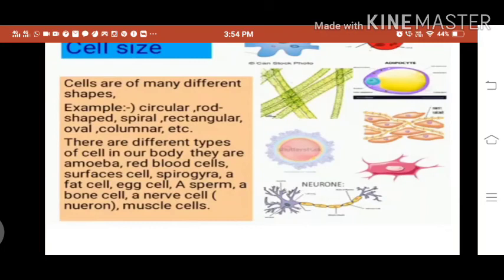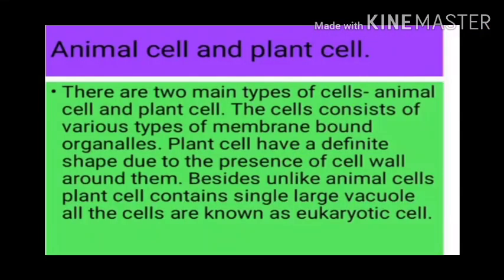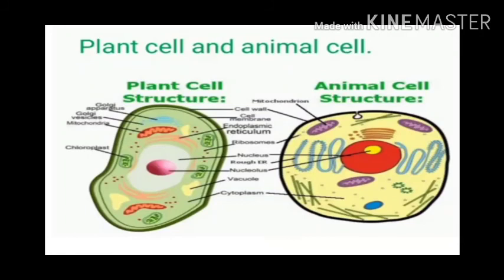There are two main types of cells: animal cell and plant cell. These cells consist of various types of membrane-bound cell organelles. Plant cells have a definite shape due to the presence of the cell wall around them. Unlike animal cells, plant cells contain a single large vacuole. All these cells are known as eukaryotic cells. Observe the picture showing the plant cell and animal cell.